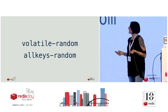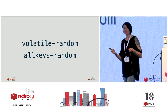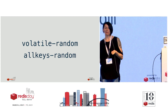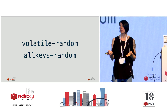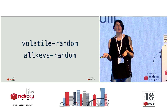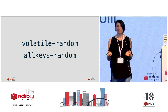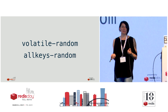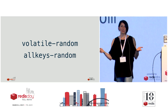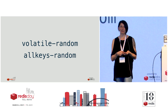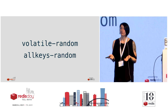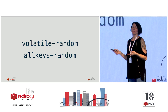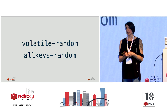You would use the LRU eviction policy if you had a power law distribution - so you access 20% of the keys 80% of the time. In those cases, LRU eviction would make sense. But if you have a normal, uniform distribution of accesses, then you don't really need to spend all that processing power on it. You can just evict randomly.